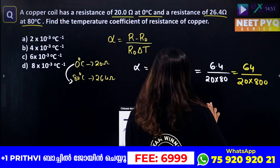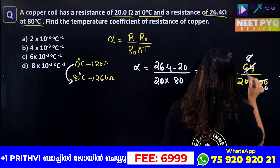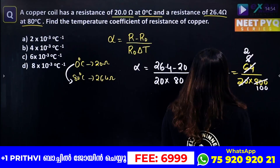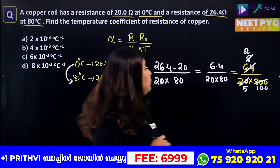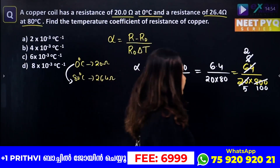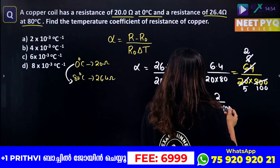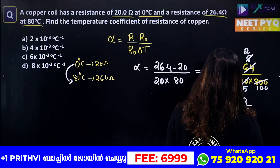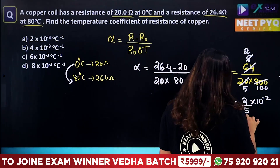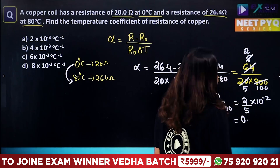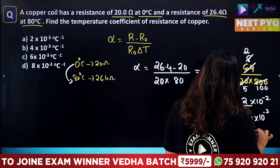You can multiply it out. 6.4 divided by 1600 — let's simplify. We get 2 by 5 into 10 raised to 2 minus 2, which gives us 2 by 5 into 10 raised to power. Further simplifying: 4 into 10 raised to 3. This gives us the temperature coefficient of resistance alpha for copper.